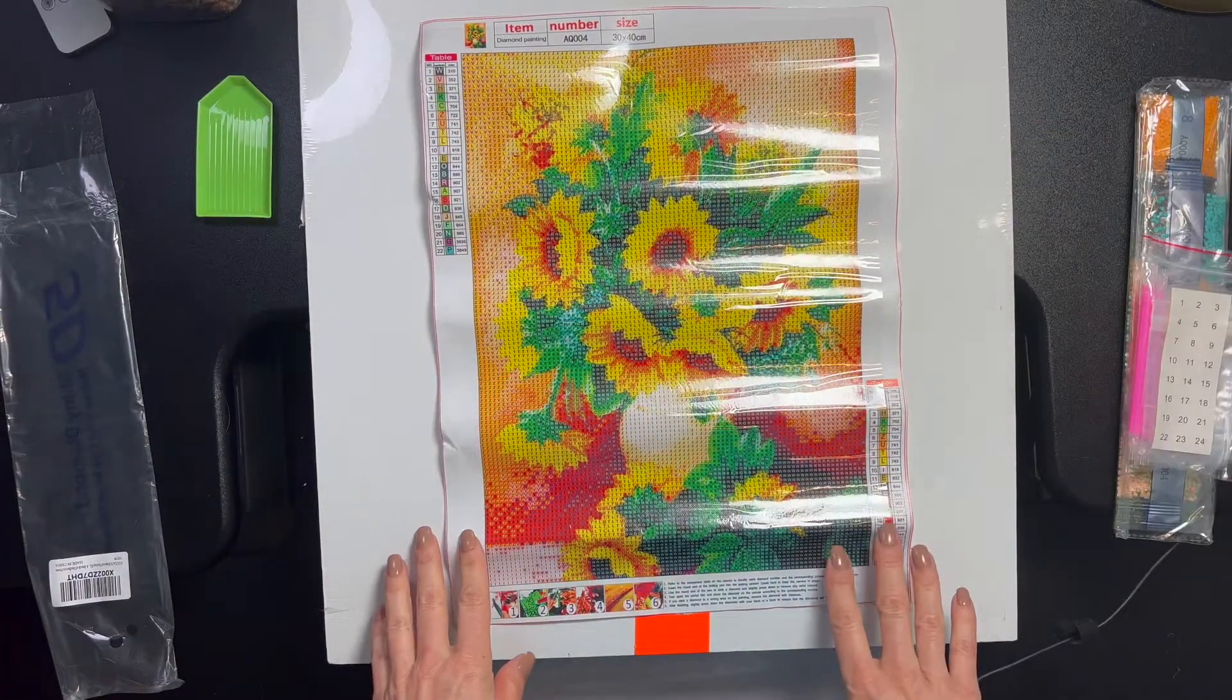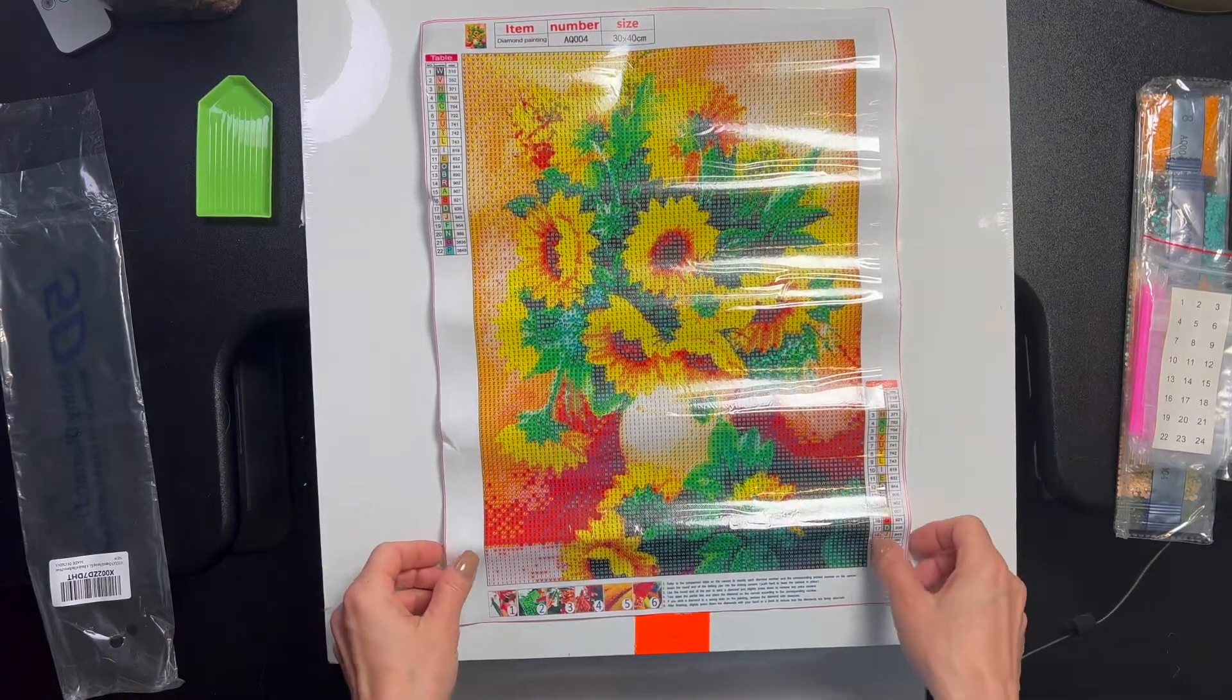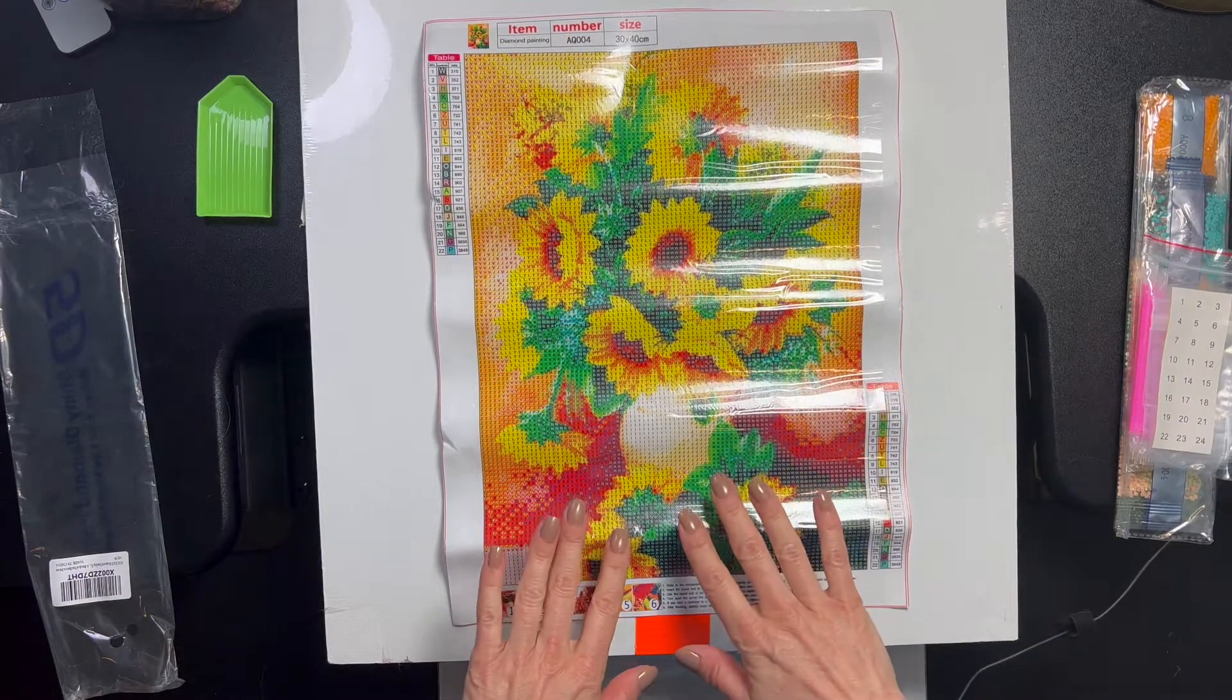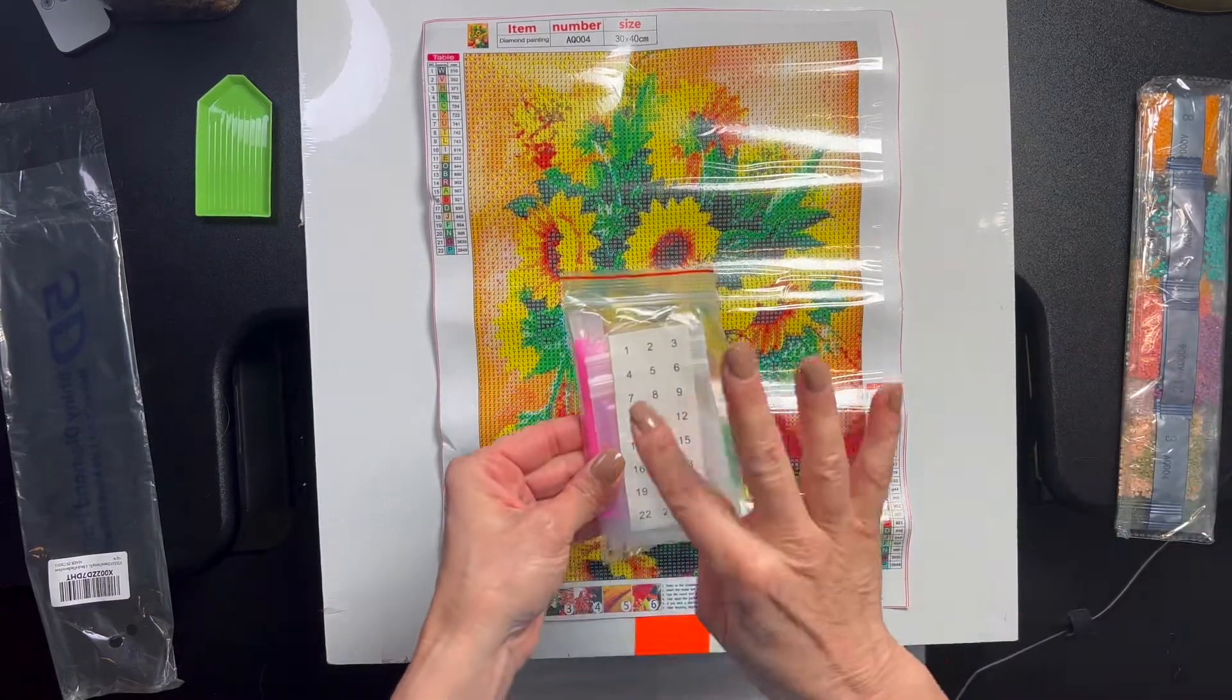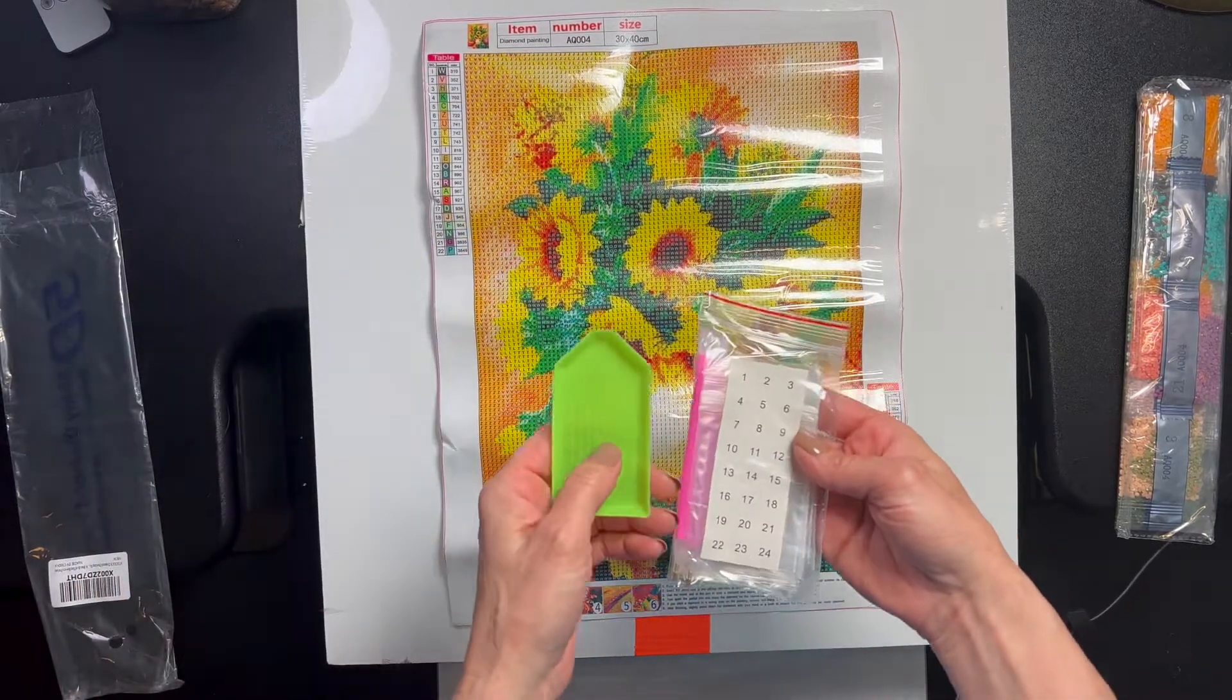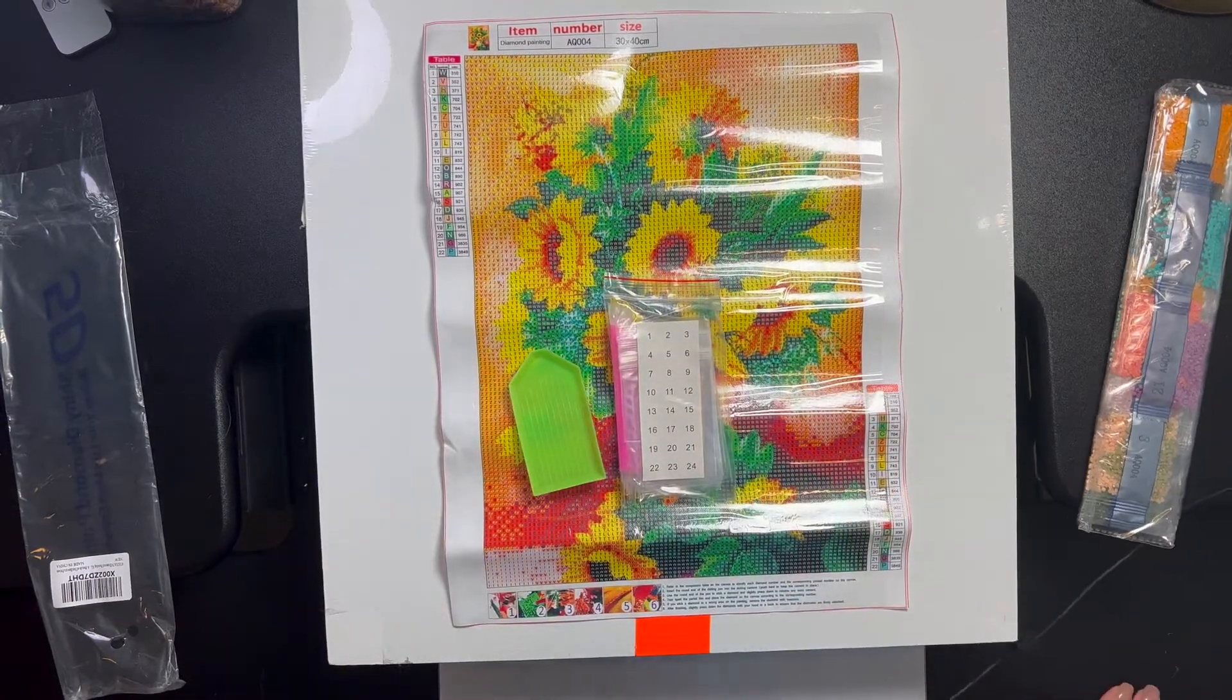Look at it. It says 30 by 40. We don't know, we'll have to measure it. There are 22 colors in this. My idea of this painting, I'll fill you out, but right now, we have our kit. Let me see what else we have.